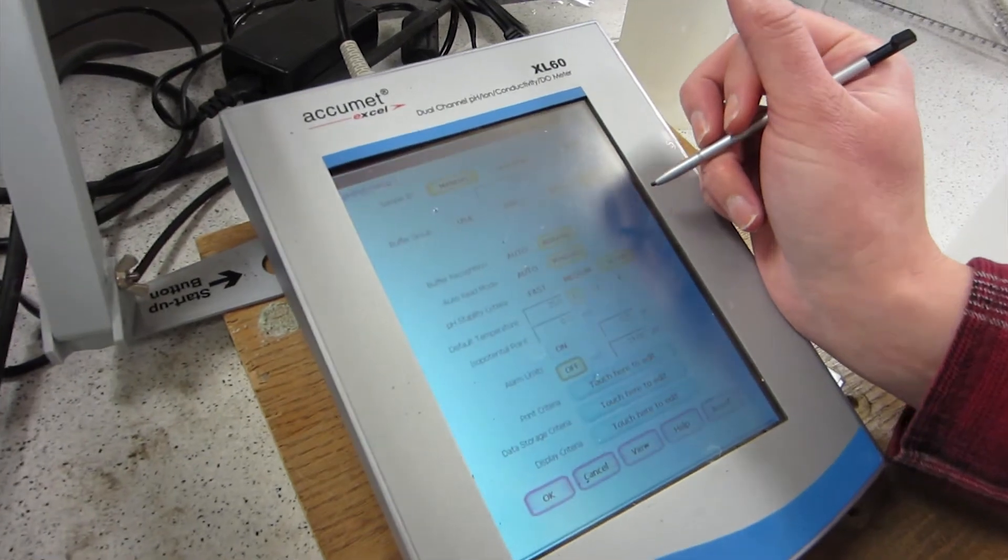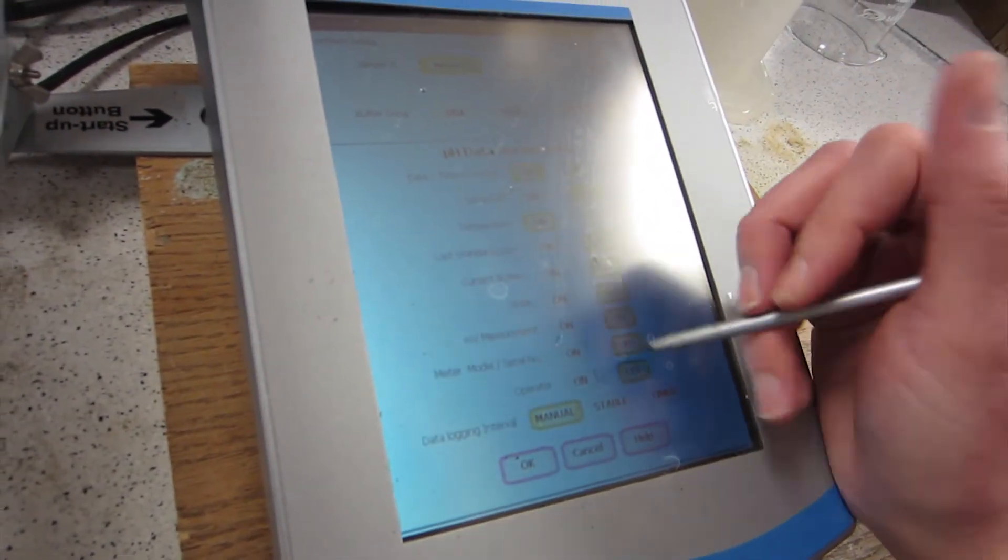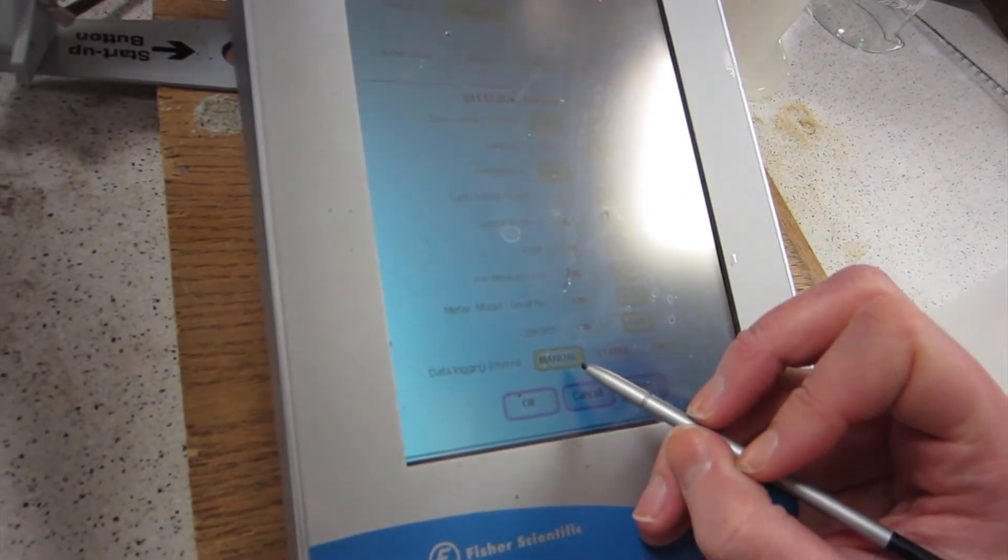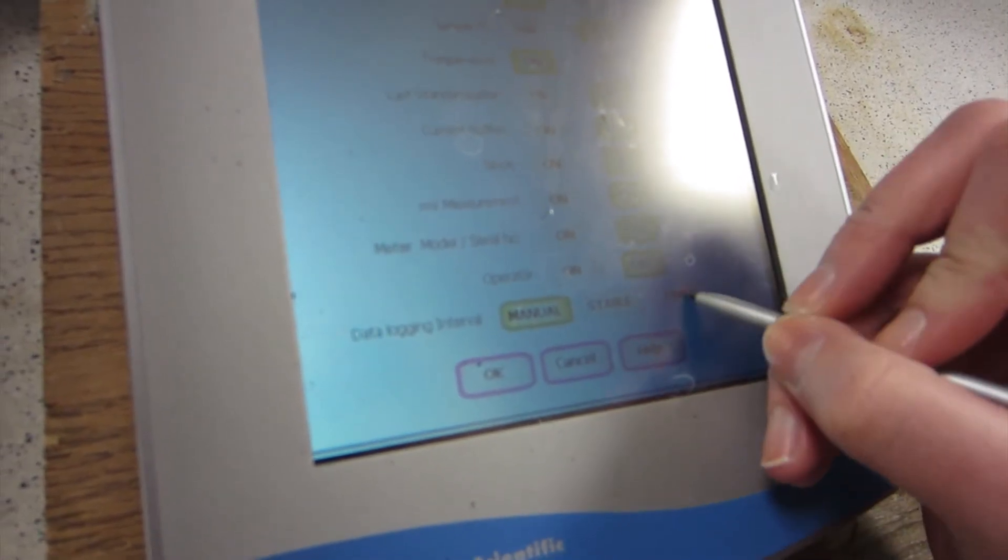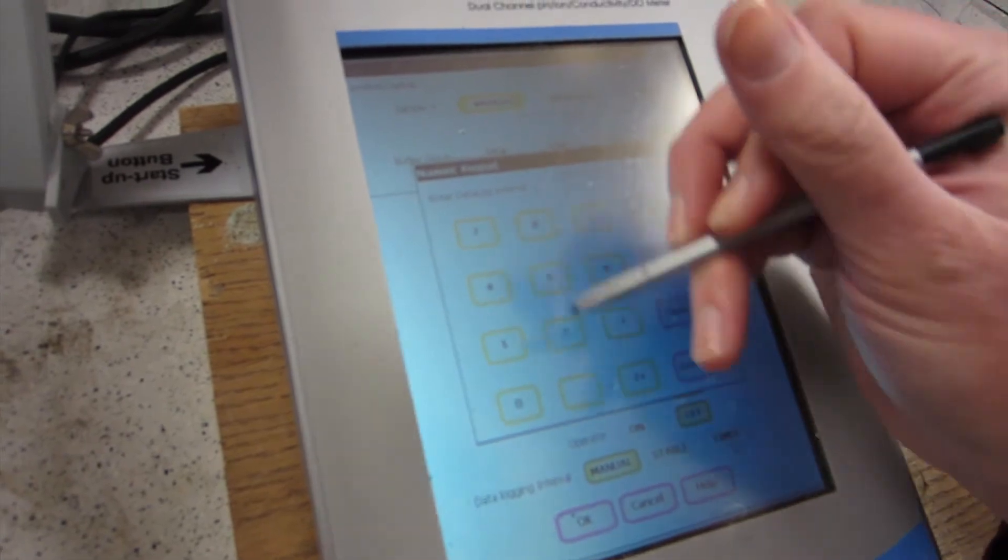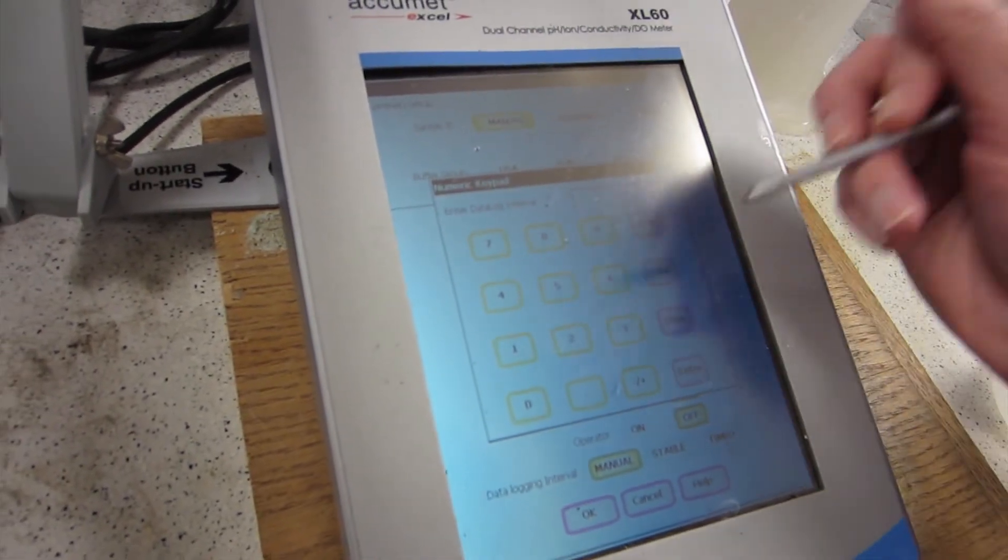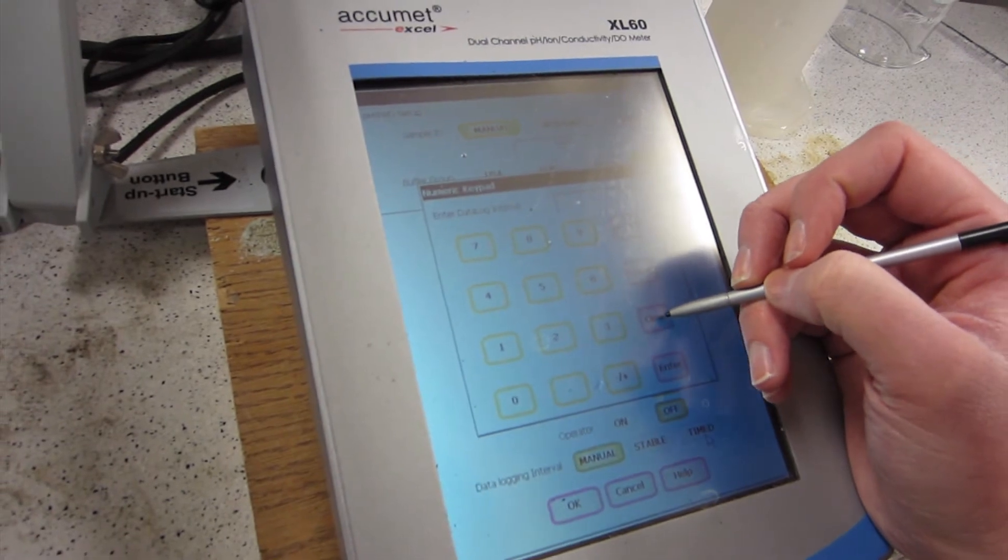Another thing you want to make sure of is that it's set to take data at a certain timed interval. Right now it's set to manual, which means you have to hit every time that you want it to take data. You're going to want to go to timed. The fastest that it can take is three seconds. You can choose the amount of time that you want it to take, and it'll take data every three seconds. Make sure that it's set to that before you start running.